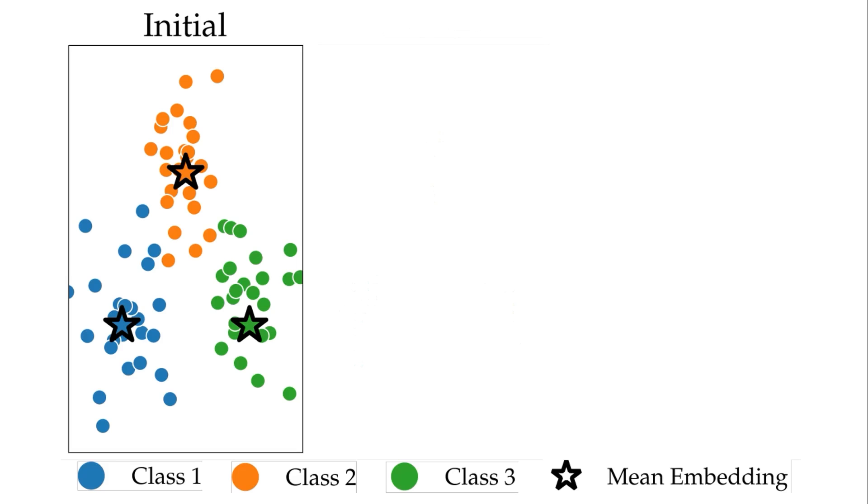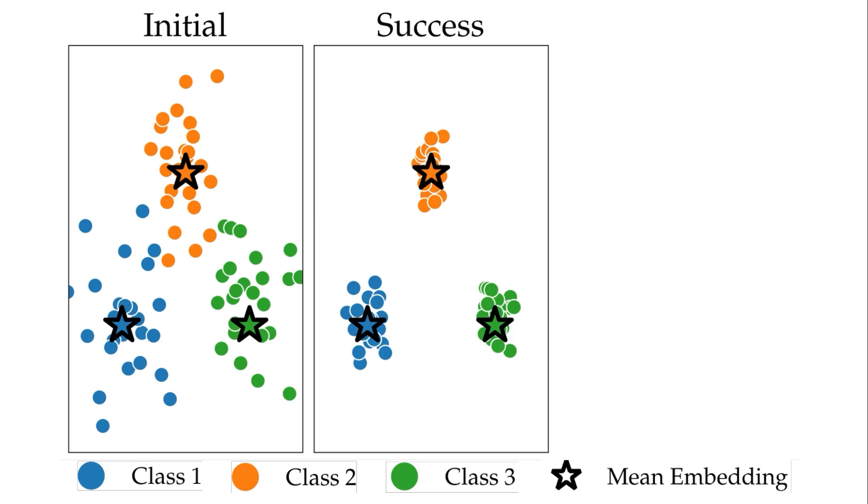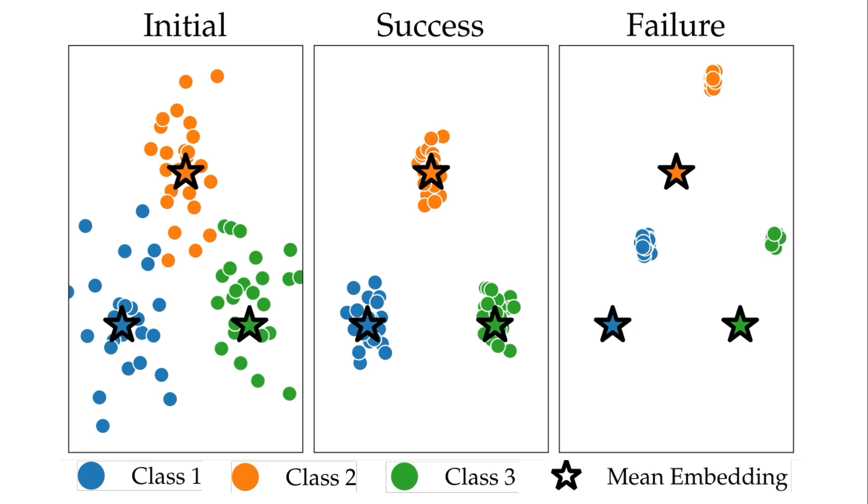Once we apply the entropy minimization technique, we see that it helps the model form well-separated clusters around the mean embedding of the training data of each class. But if we train this entropy minimization much, the clusters start to diverge from the mean embedding, and this is when the failure happens.